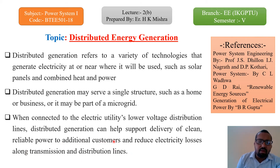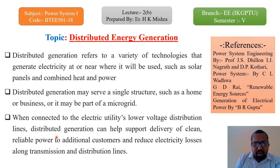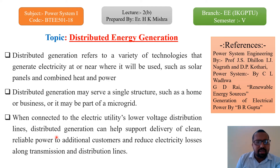Some distribution losses also occur as line losses, and distributed generation should reduce those as well. When supply comes from a far area, around two or three kilometers along the distribution line, the voltage level at the last end of the location is too low and the power quality is very poor. When we connect distributed generating systems within the distribution system and synchronize them, the power quality will be improved.